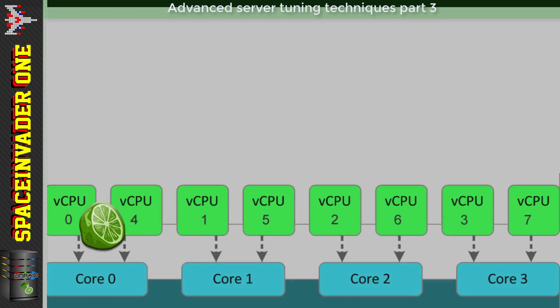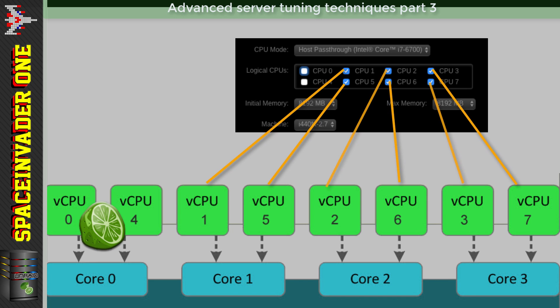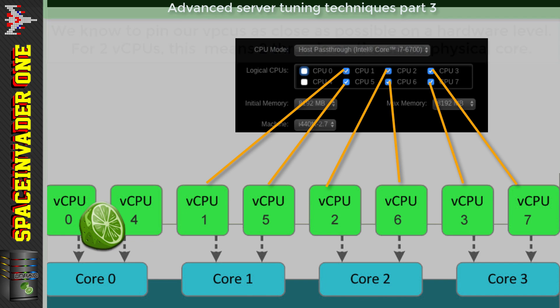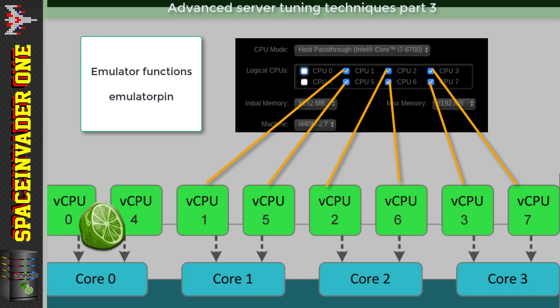Now let's move on and discuss some techniques to fine-tune VMs. We're going to go back to the four-core i7-6700 server and take a basic look at how a VM operates. We've seen how to pin virtual CPUs to logical cores, but is that all the VM uses - just those pinned cores? No, there are overheads too. The hardware is emulated by our CPU, and we can actually pin which cores these emulation functions are running on.